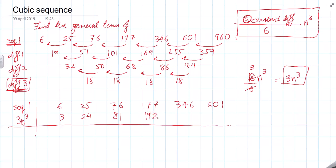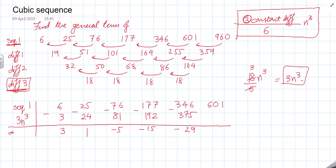Now I filter off the effect of 3n³ by subtracting those values from the original sequence. Subtracting gives a new sequence: 3, 1, −5, −15, −29. So I get a new sequence by filtering off the effect of 3n³.